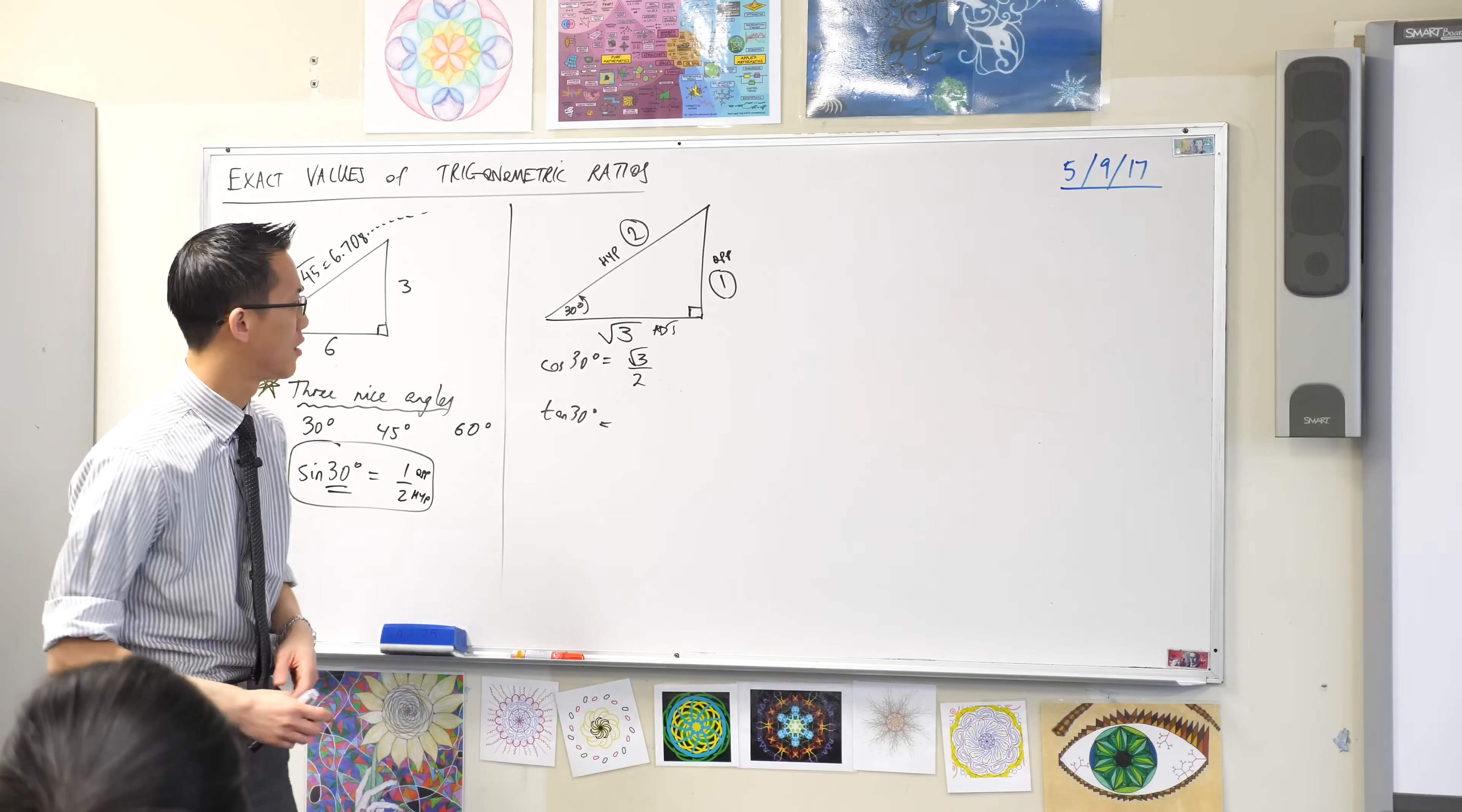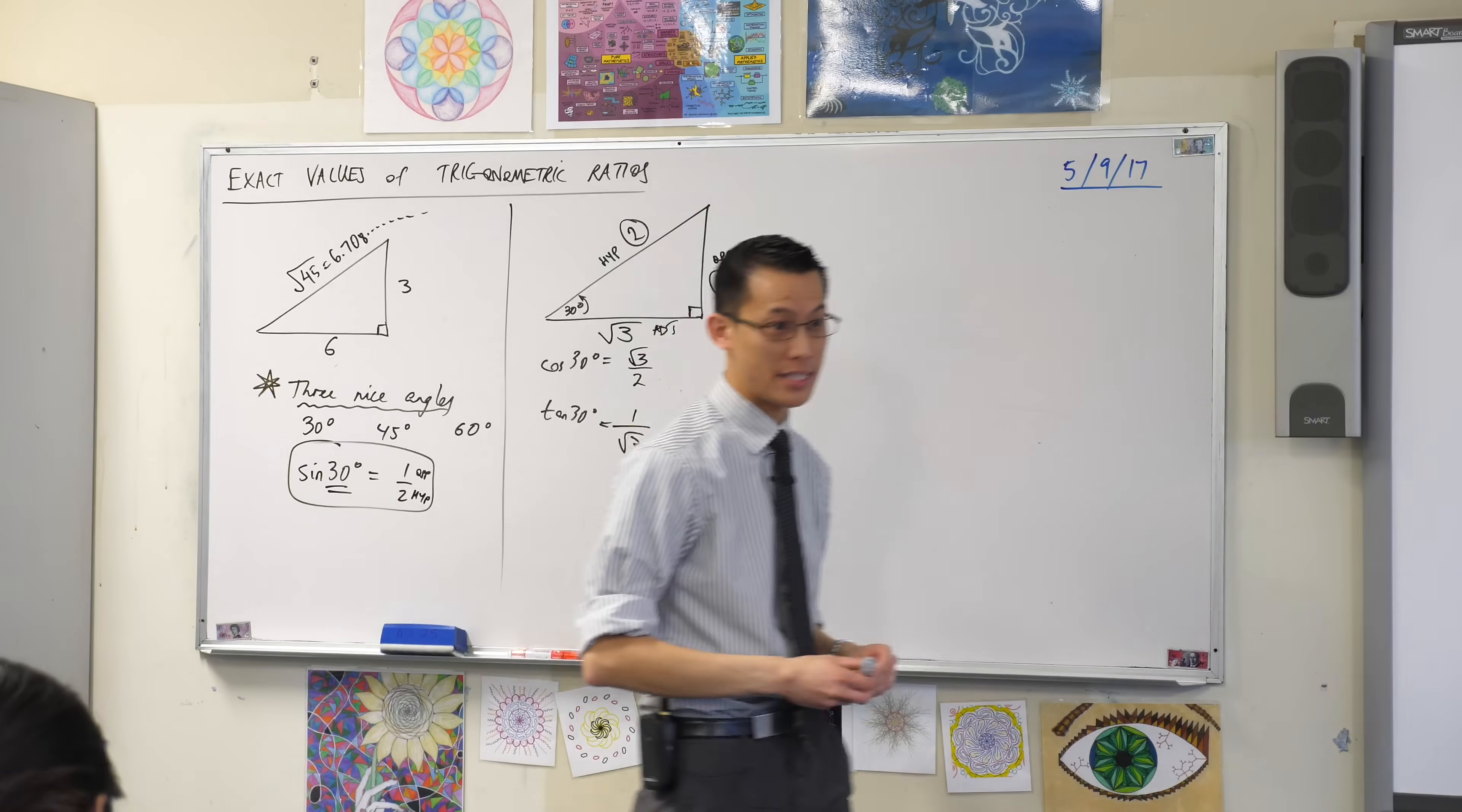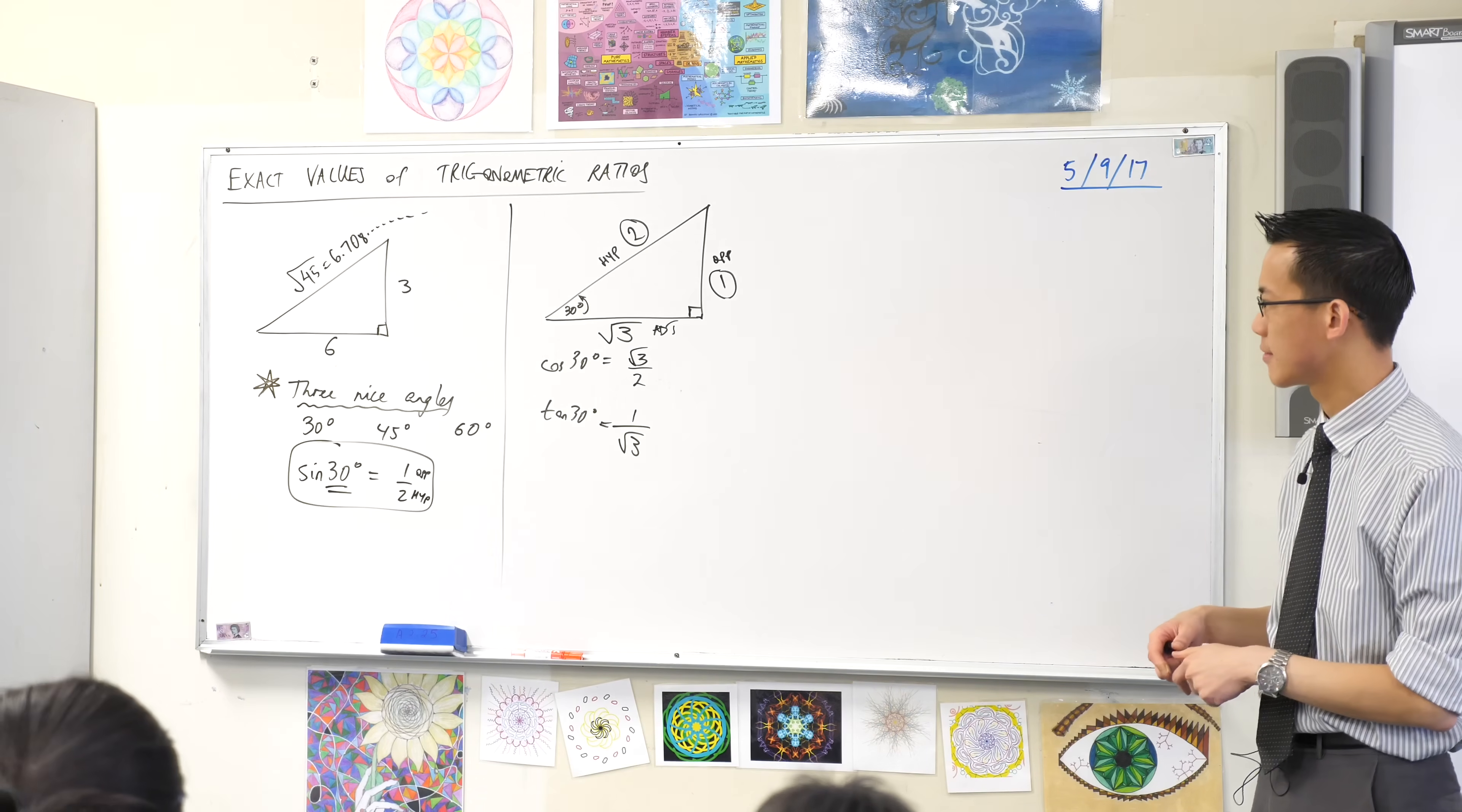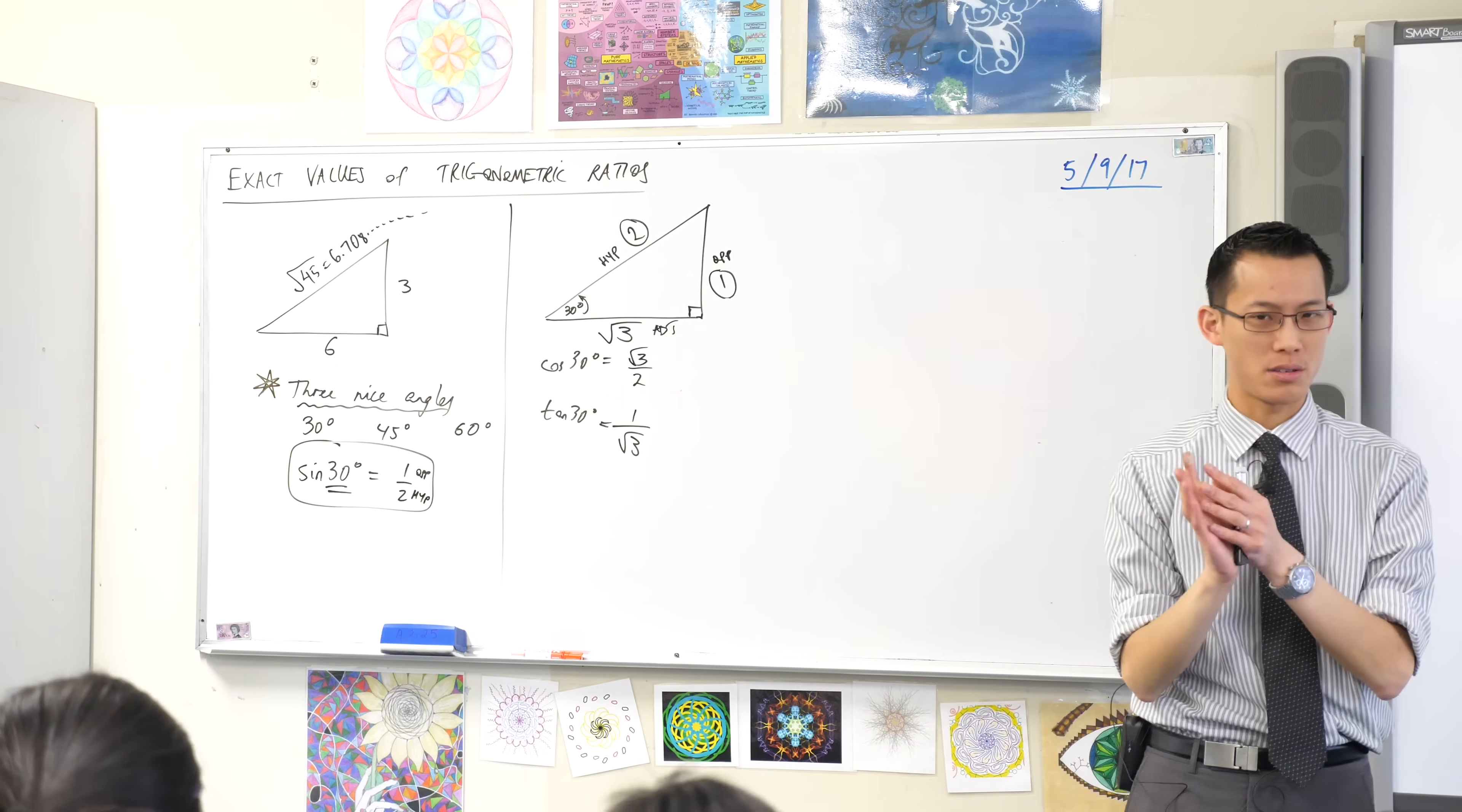So SOH-CAH-TOA tells us this has to be root three on two. Have a look at tan now. Which sides am I interested in for tan? Opposite over adjacent, which is going to be one on root three. And you can go to your calculator, you can type in tan 30, and then the person next to you can type in one on root three. And sure enough, you get all the exact same decimal places all the way to the end. Okay, so sin 30, cos 30, tan 30. Your calculator can give you decimals, but we can get the exact values even with the thirds. Okay, so that's much more powerful.